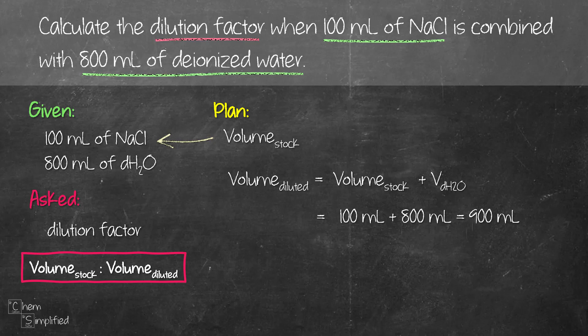So we can easily find the dilution factor, which is basically the ratio of 100 to 900. Because we have 100 for the volume of stock and then 900 is the total volume of the entire diluted solution. So 100 to 900. And then we need to simplify it so that it ends up with 1 to a number. So that's going to end up as 1 to 9 ratio.